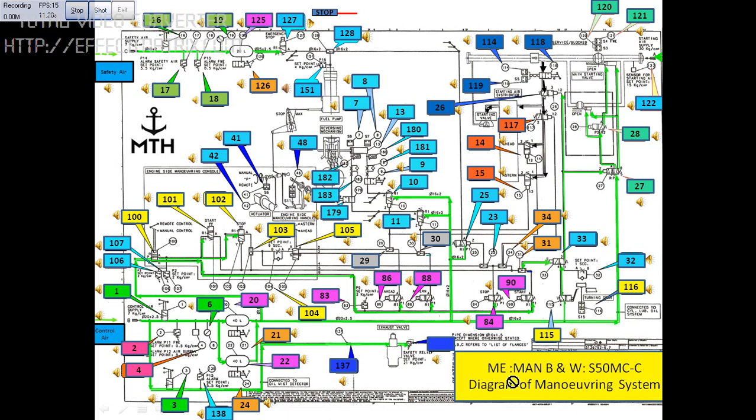especially for main engine MAN B&W. So most of the time MAN B&W will give a diagram which will be similar to this, but very important is how to identify each component where they are placed.